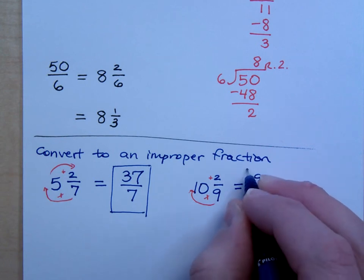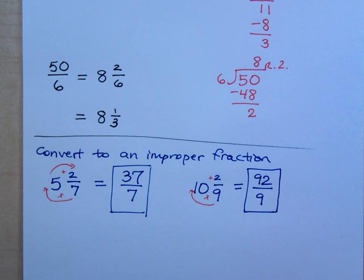Well, that's an easy way to check to make sure that the improper fraction is the same as the mixed number. You could just divide this, right? 9 goes into 92, 10 times with 2 left over.